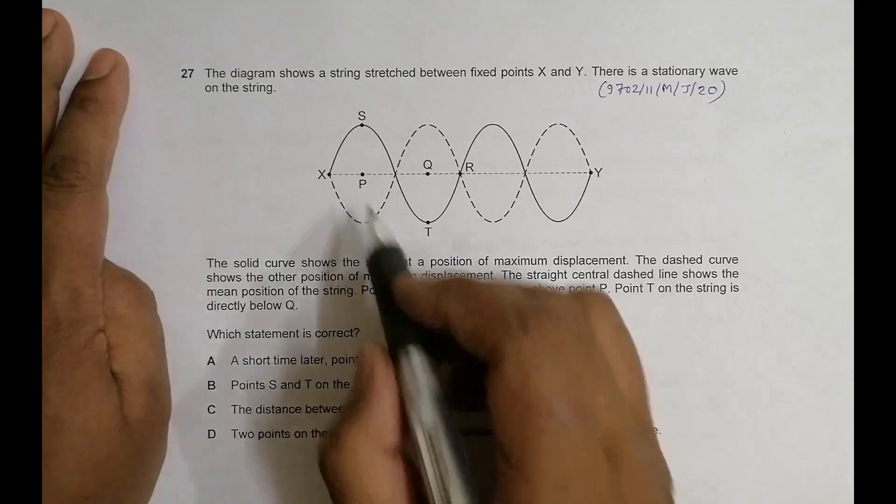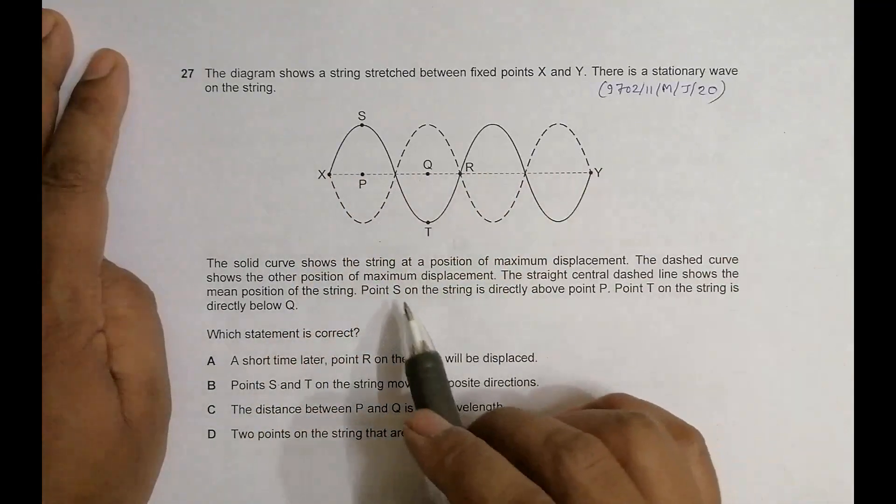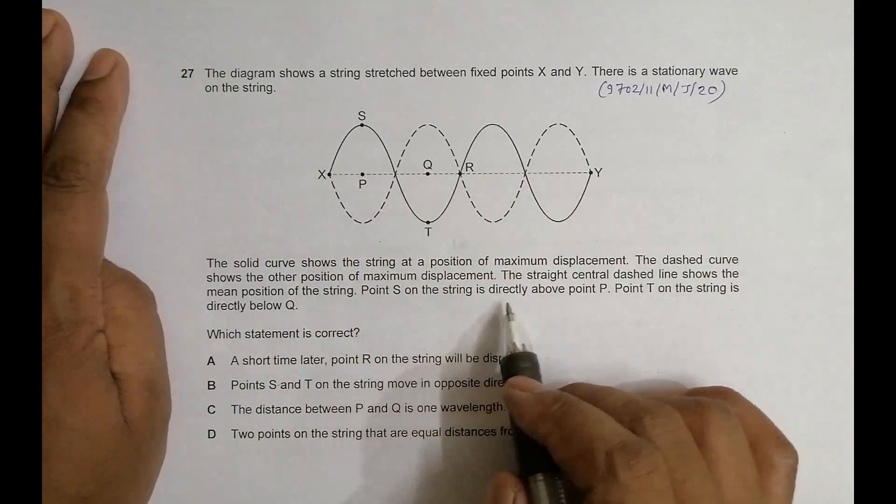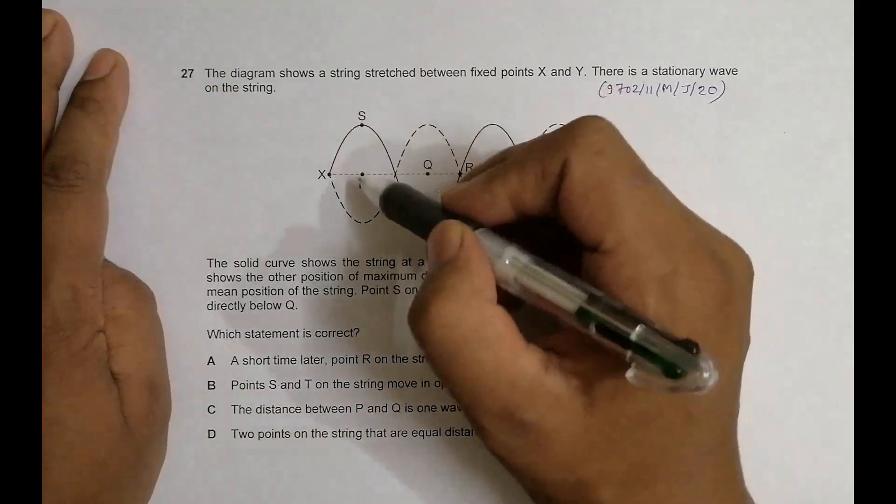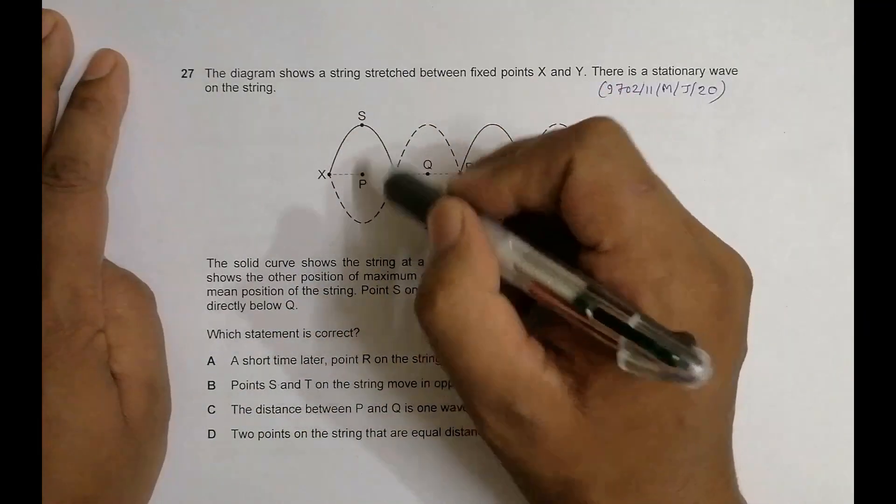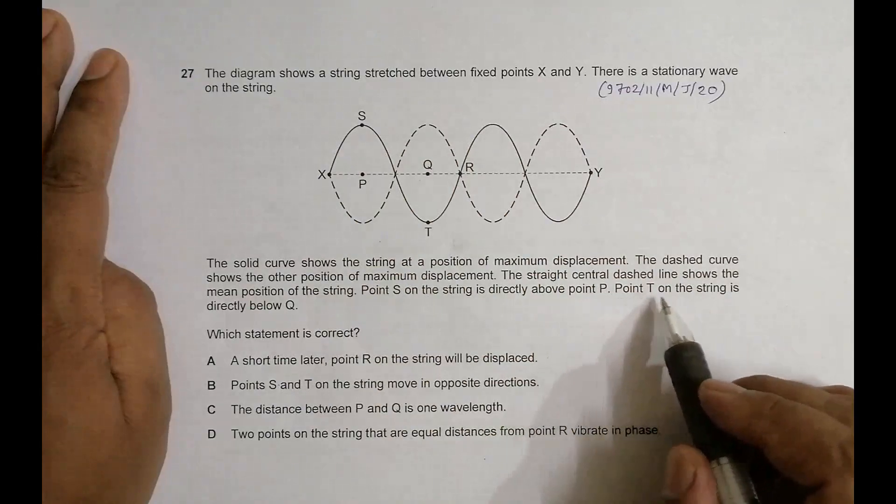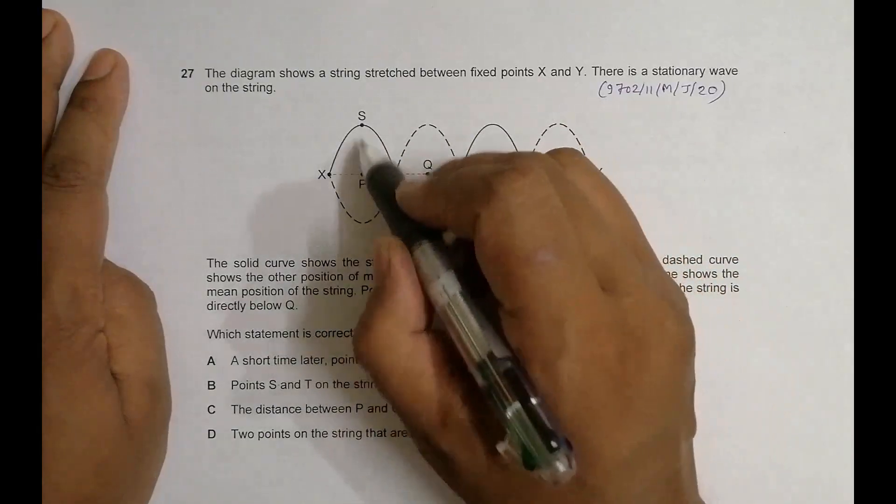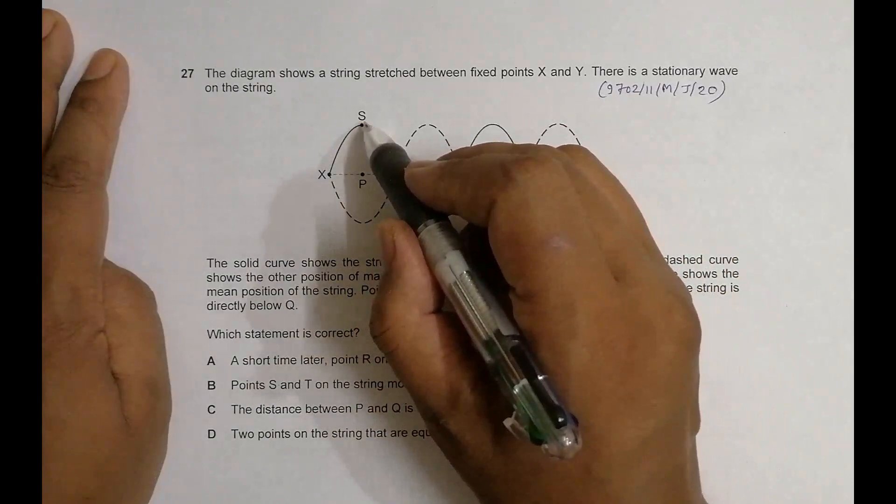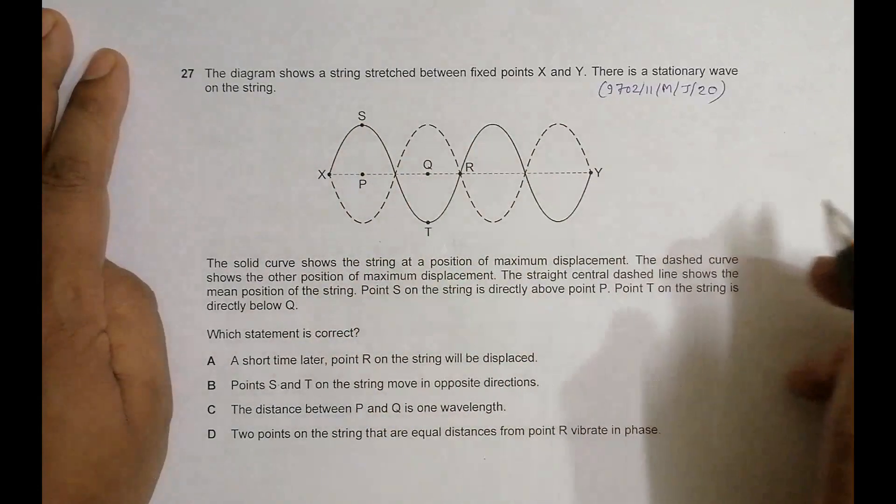The straight central dashed line shows the mean position of the string. Point S on the string is directly above P, so it's the antinode point here. Point T on the string is directly below Q, so it is the maximum upward amplitude, maximum downward amplitude.